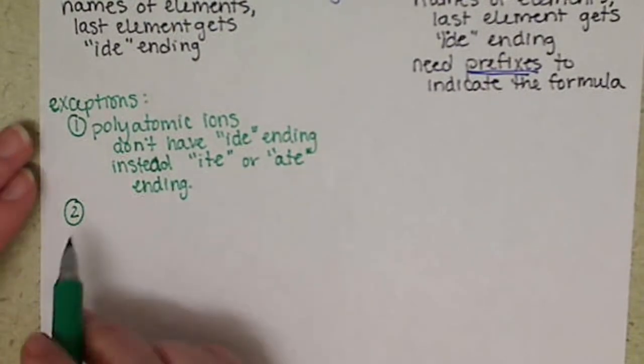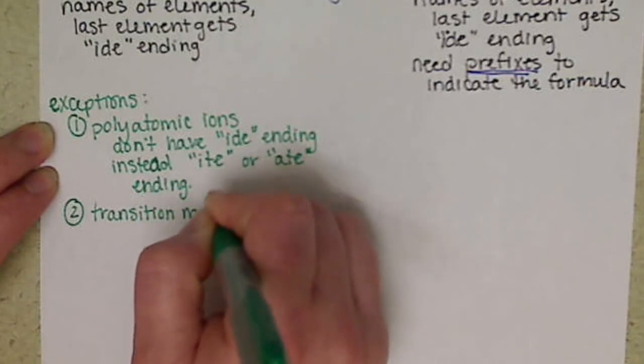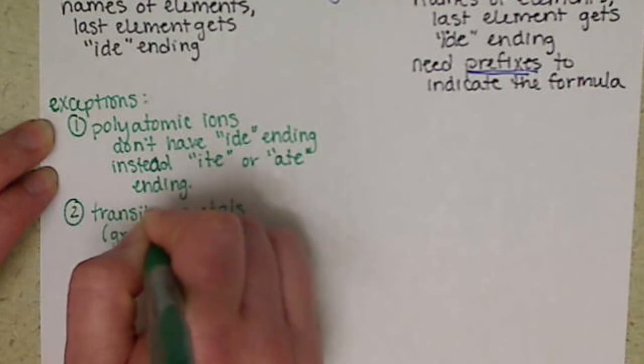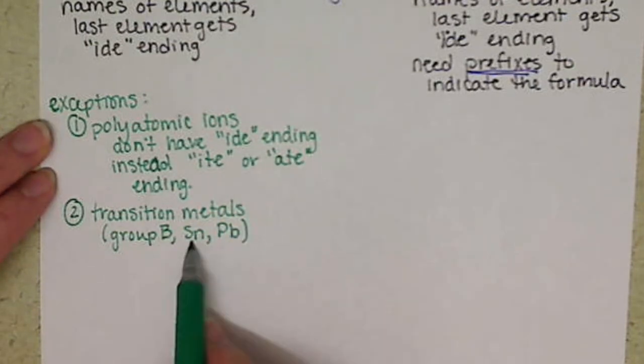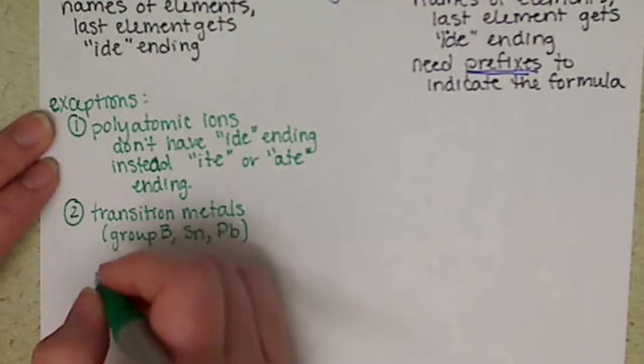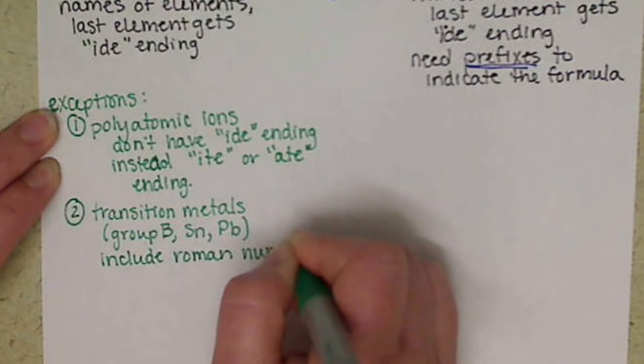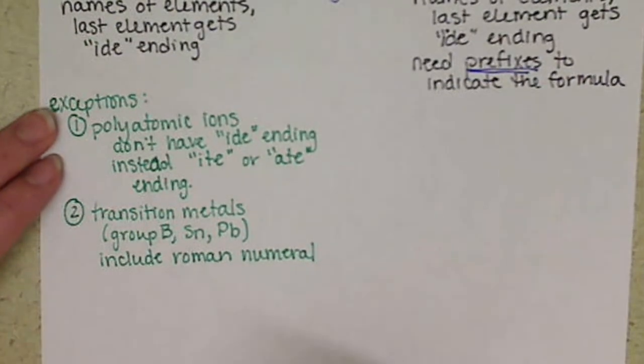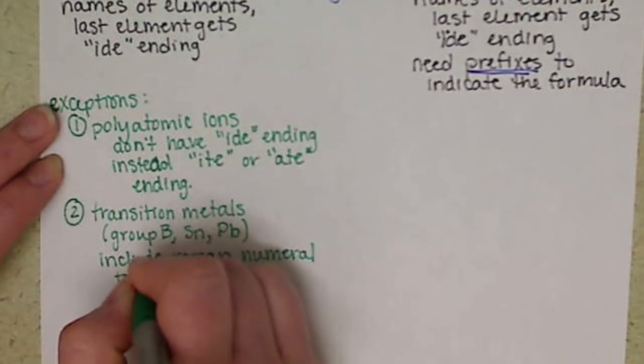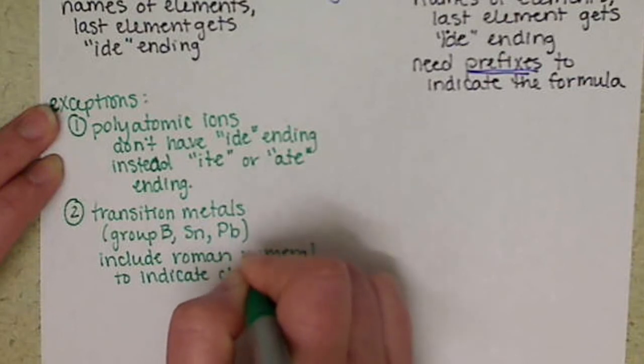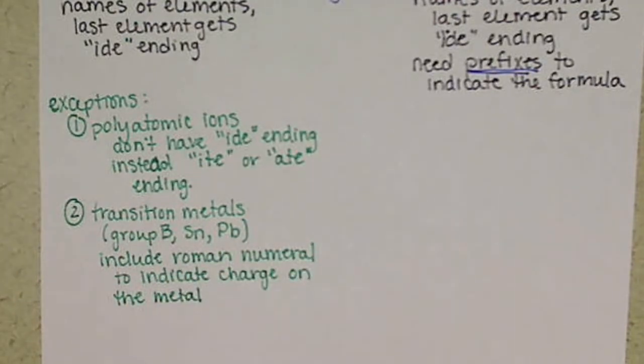The other exceptions for your ionic compounds are your transition metals. These are everything in Group B, and we're also including tin and lead, Sn and Pb. The thing we have to remember for them is we include the Roman numeral, which tells us the charge on the metal. It tells us nothing about the formula.